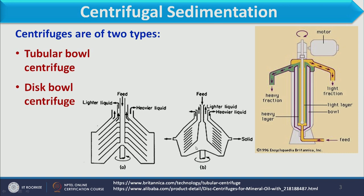Another diagram of the disc bowl centrifuge shows that liquid is collected from the inner section where discs are available, and heavier liquid is collected at the outer section, while lighter liquid is taken from the center. Solid deposited at the periphery can also be removed. Both disc bowl and tubular bowl centrifuges are used to separate particles as well as heavy and light liquids.